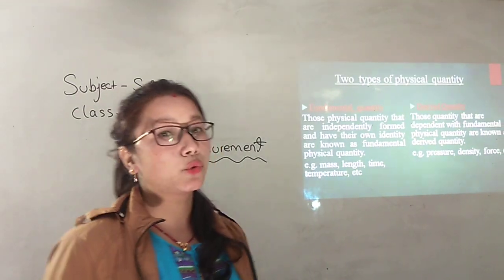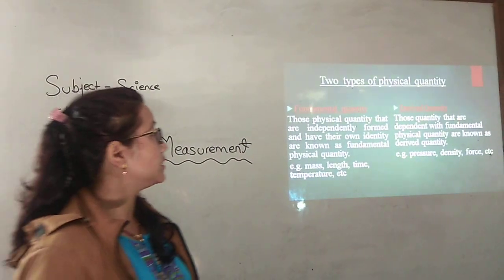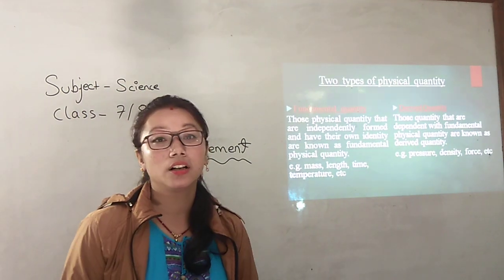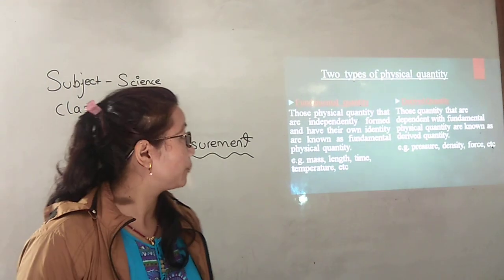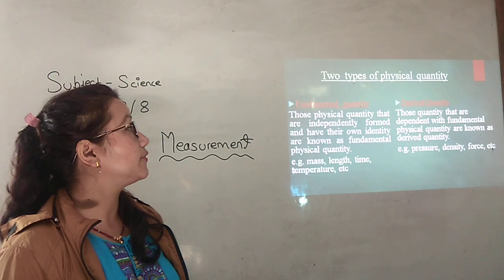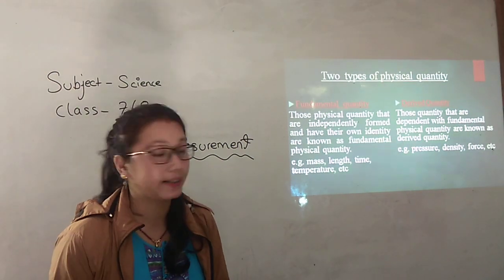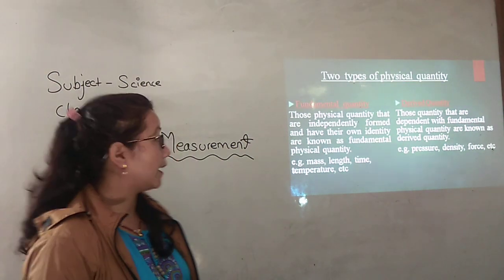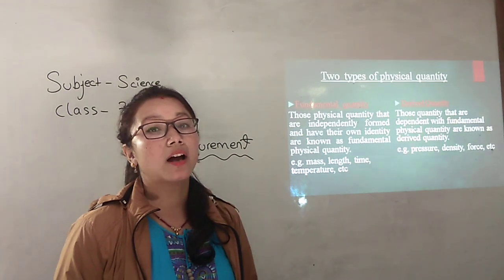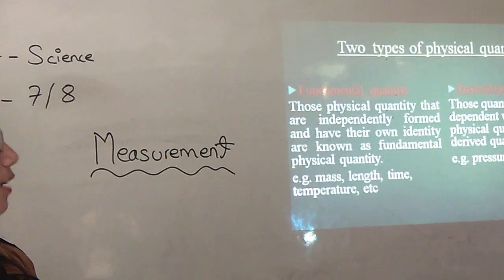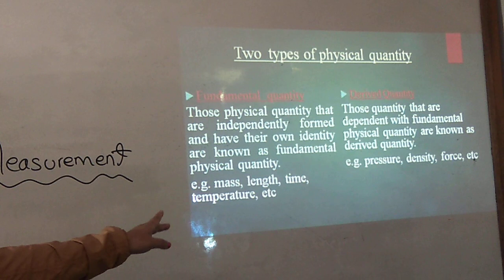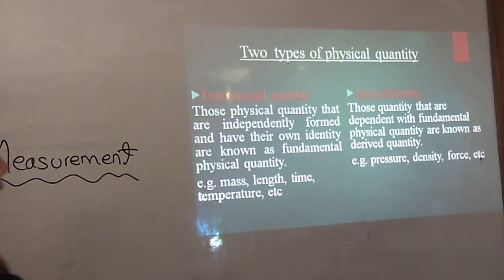Then under the physical quantity there are two types of physical quantity: that is the fundamental quantity and the derived quantity. Fundamental quantity. Those physical quantity that are independently formed and have their own identity are known as the fundamental quantity, such as for example mass, length, time, temperature, etc. that we can measure.